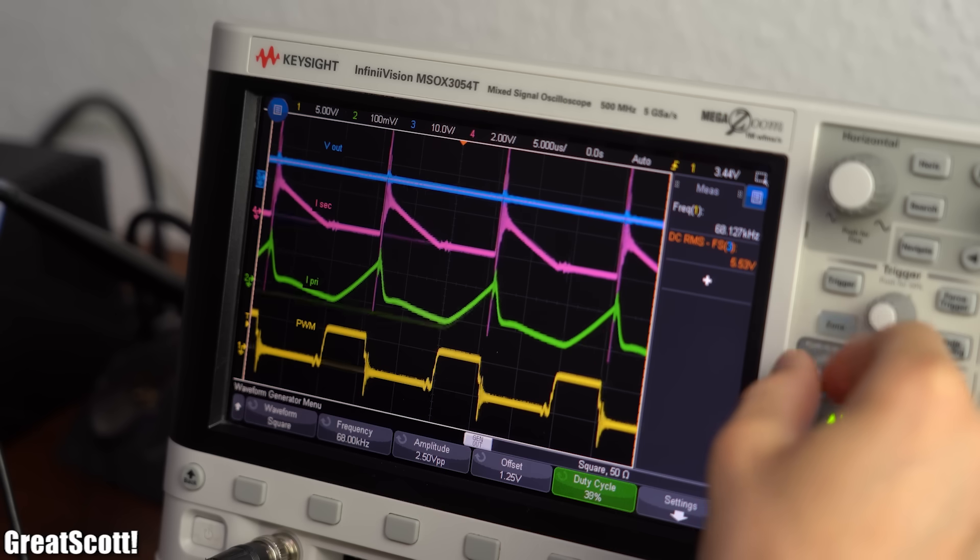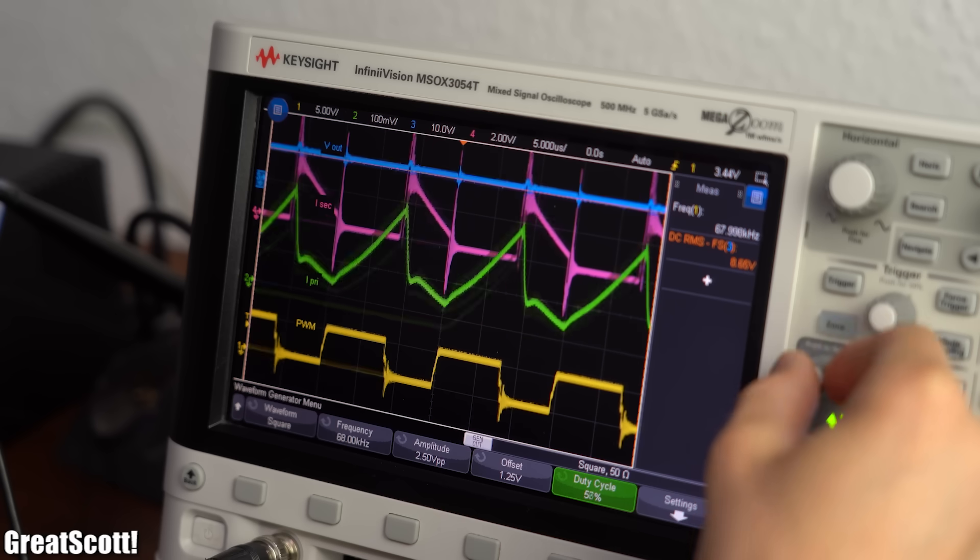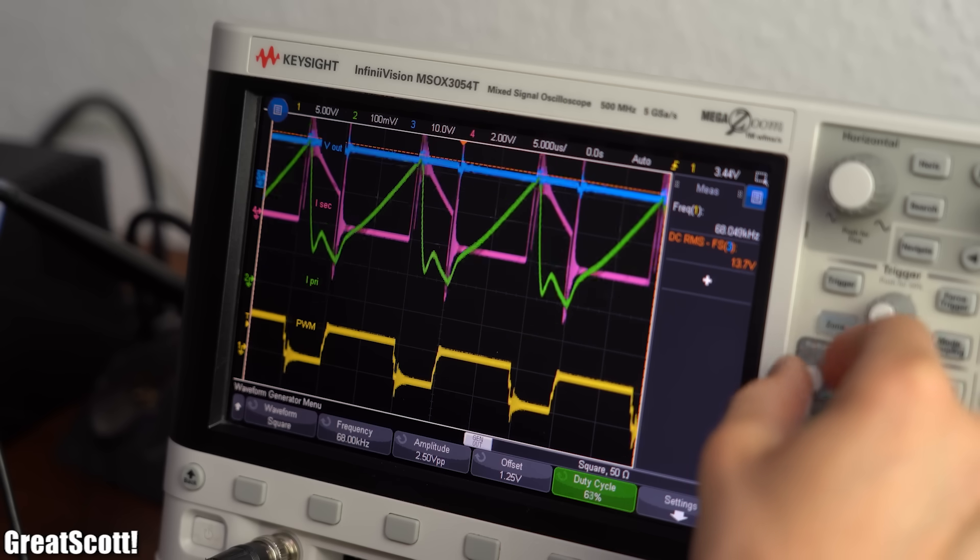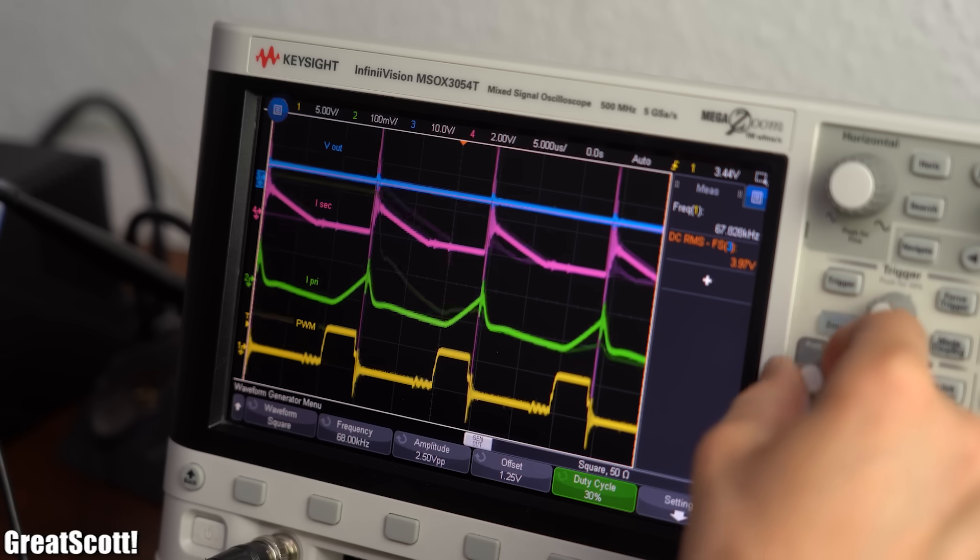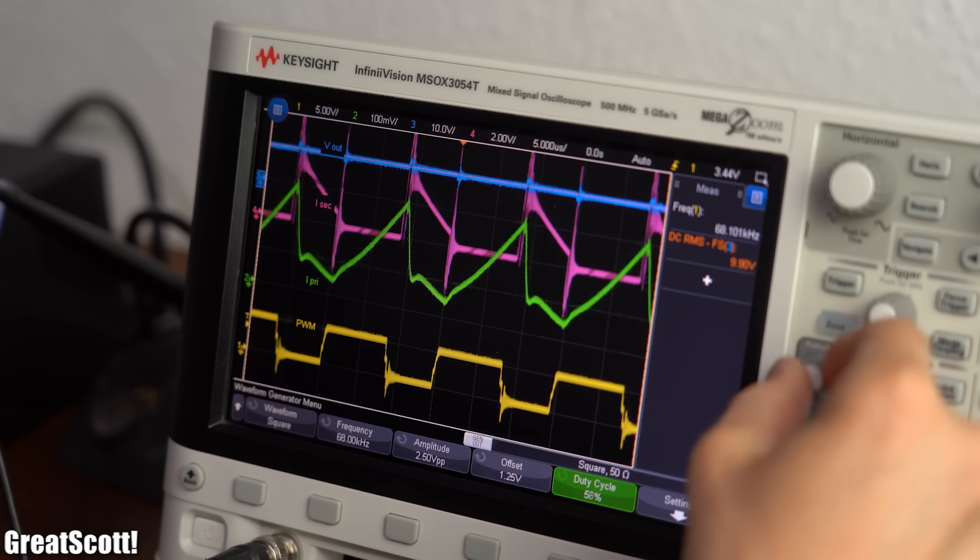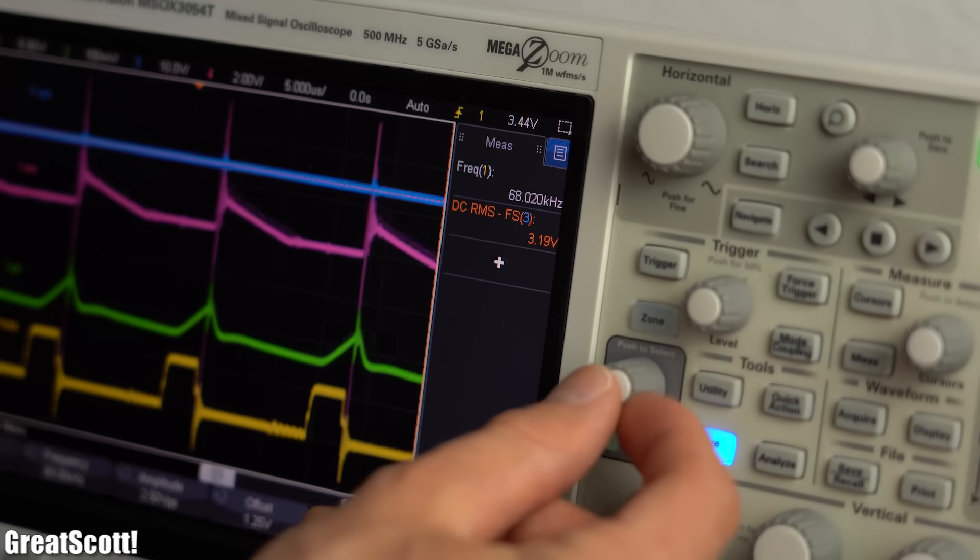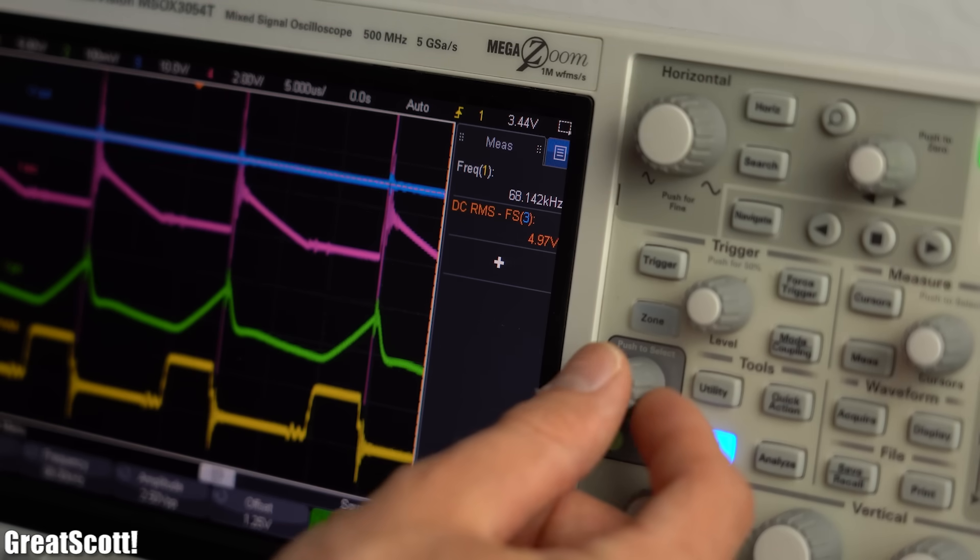And now we can create an adjustable voltage on the output depending on how we set the duty cycle for the MOSFET, because that determines how much energy we transfer to the secondary side. But as a simple example, I went with an output voltage of 5V.